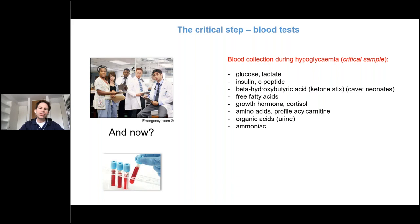You also need to measure free fatty acids and hormones like growth hormone and cortisol, as well as amino acids and an acylcarnitine profile. Finally, organic acids in urine and ammonia concentration in blood should be measured to get a full picture covering each differential diagnosis.